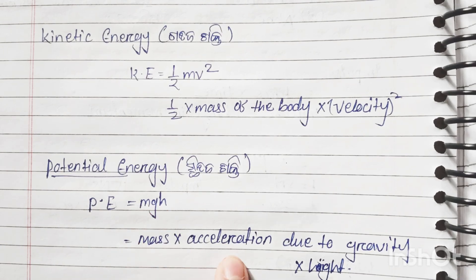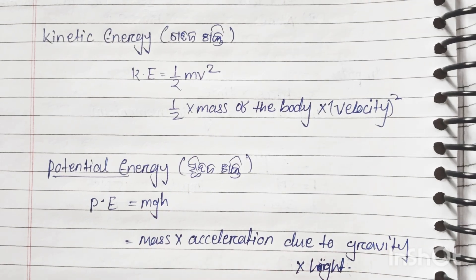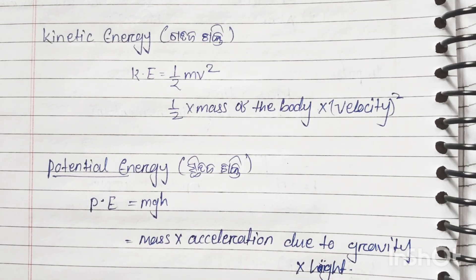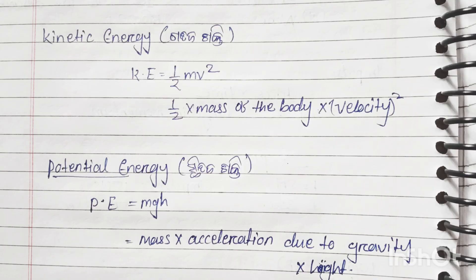Potential energy formula: PE equals mgh — mass into acceleration due to gravity into height. The unit of potential energy is also Joules.